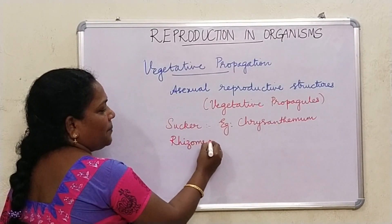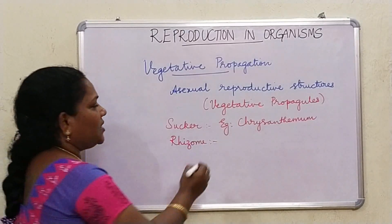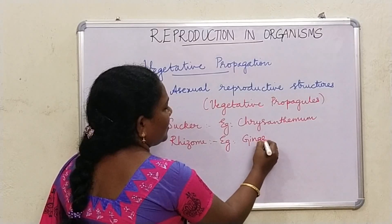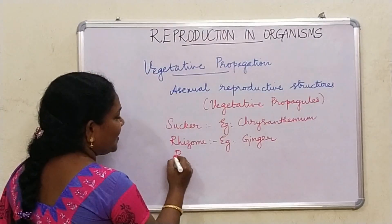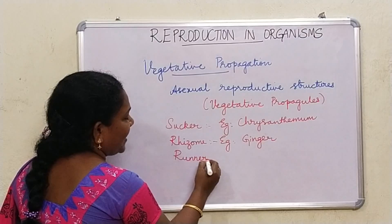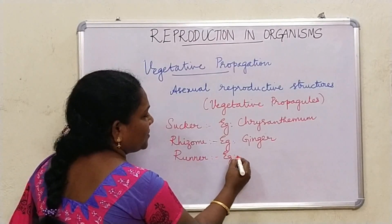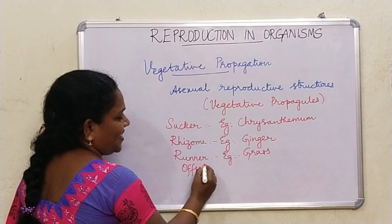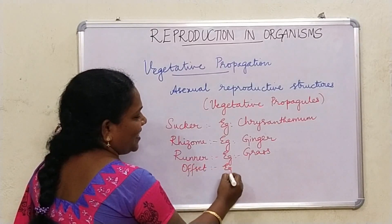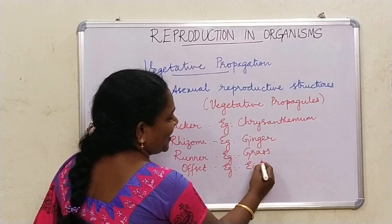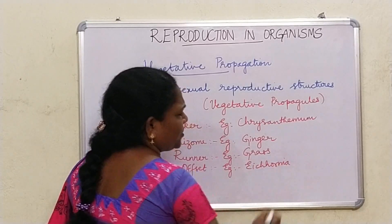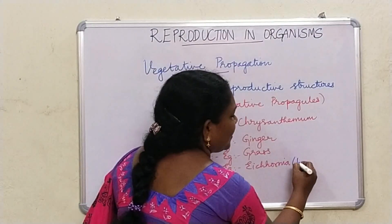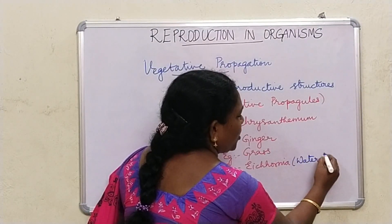Then runner — example: grass. Offset — example: Eichornia. What is special about Eichornia? Its common name is Water Hyacinth.